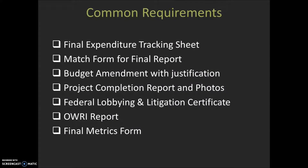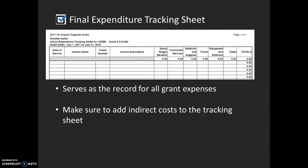Some of the common requirements with a final fund request include the final expenditure tracking sheet. You must submit a complete tracking sheet that documents all OWEB expenses incurred with the grant. This tracking sheet serves as the final record of the grant's expenses, so it's important that all expenses are contained here. Please add the indirect costs to the tracking sheet as well as the other category costs. We want a complete record of the grant spending.